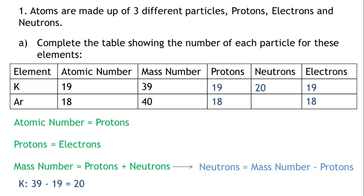Argon has a mass number of 40 and has 18 protons. 40 minus 18 equals 22. Argon therefore has 22 neutrons.